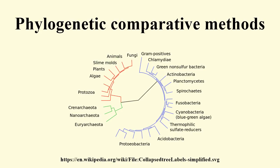Phylogenetic comparative methods are commonly applied to such questions as: What is the slope of an allometric scaling relationship? For example, how does brain mass vary in relation to body mass? Do different clades of organisms differ with respect to some phenotypic trait? For example, do canids have larger hearts than felids?